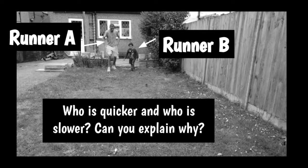Did you work out who was quicker and who was slower? Runner A was slower than runner B. Runner B was quicker. Why was runner A slower? That's right, because he ran very very slowly. He was almost walking.